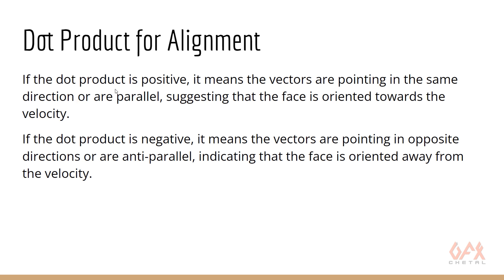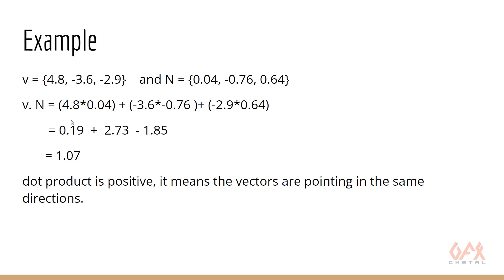Now, wherever the dot product is positive, that means the vectors are pointing in the same direction — or parallel. That suggests the face is oriented towards the velocity. If the dot product is negative, that means the vectors are anti-parallel — meaning the face is oriented away from the velocity.